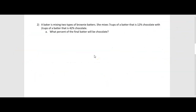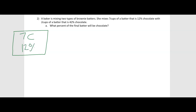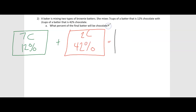Let's do one more together. This next one is about a baker. A baker is mixing two types of brownie batter. She mixes seven cups of a batter that is 12% chocolate with two cups of a batter that is 42% chocolate. We need to figure out what percent of the final batter will be chocolate. We know that our percent should be somewhere in between 12 and 42. So we have seven cups — 7C — at 12%, plus two cups of brownie mix that is 42% chocolate, and that should equal a brownie mix that has 9 cups total at some unknown percentage.